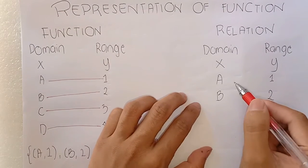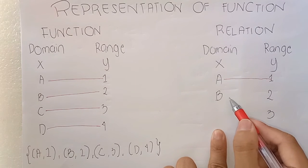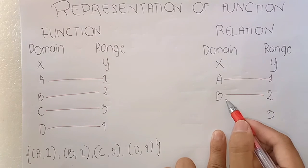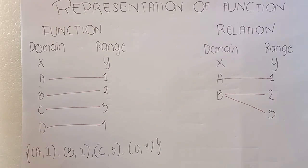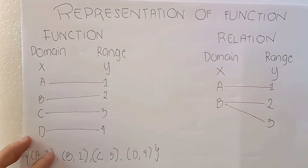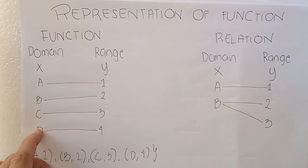A will be paired with 1, B will be paired with 2, and 3 will also be paired with B. A relation is a set of ordered pairs in which the domain is the first coordinates, and the range is the second coordinates.